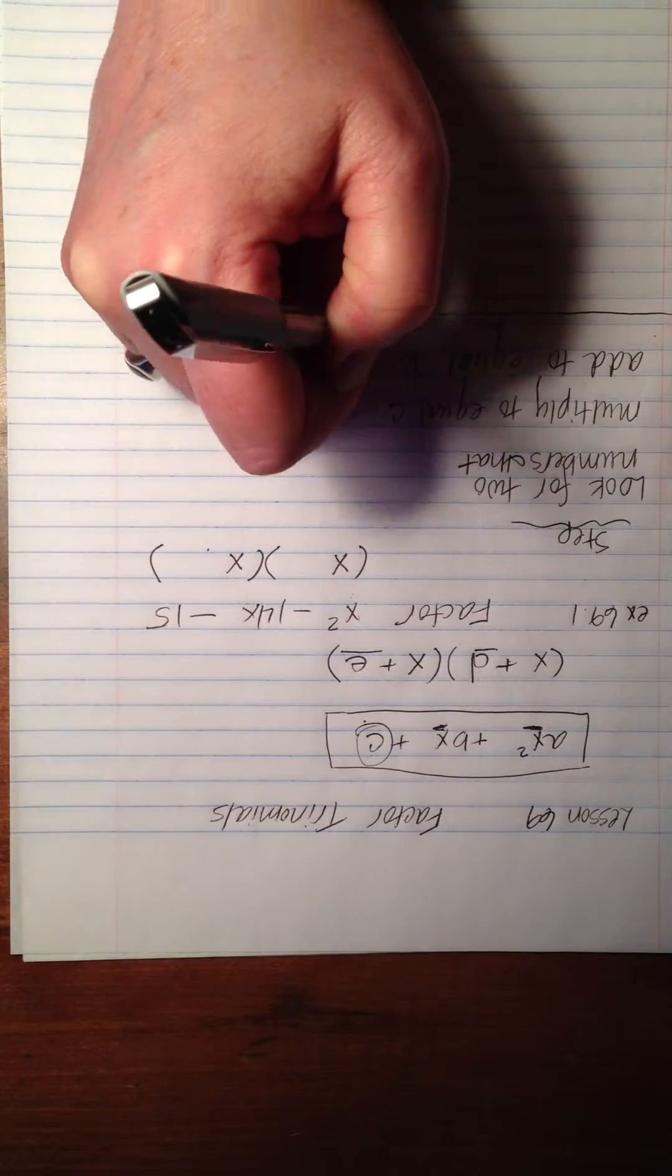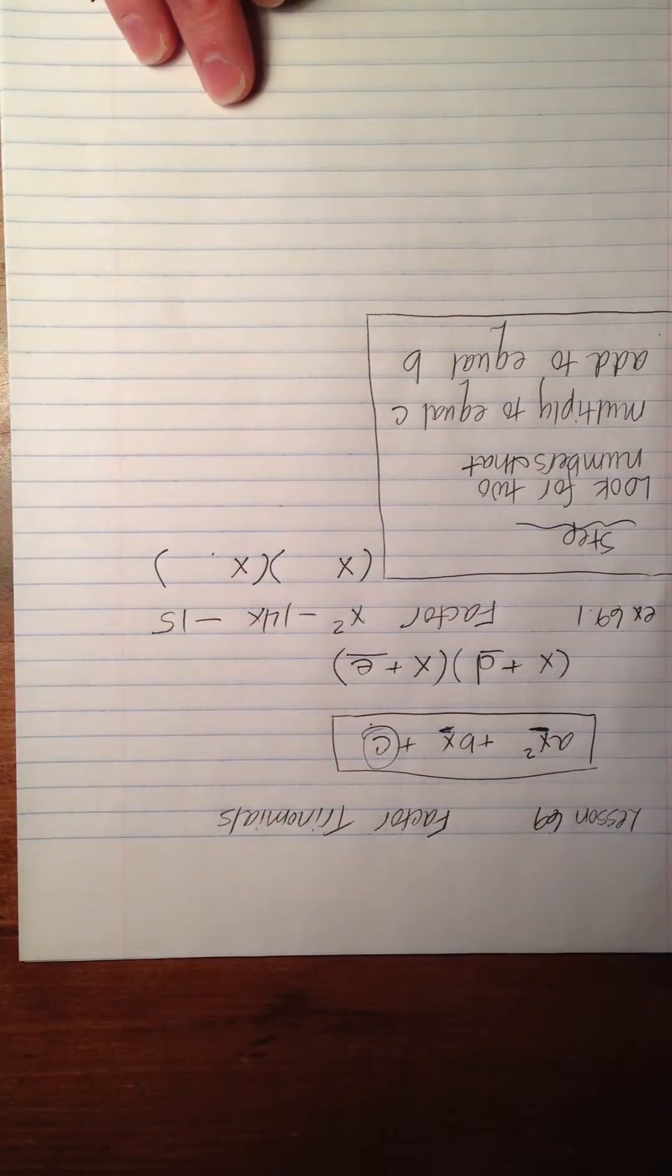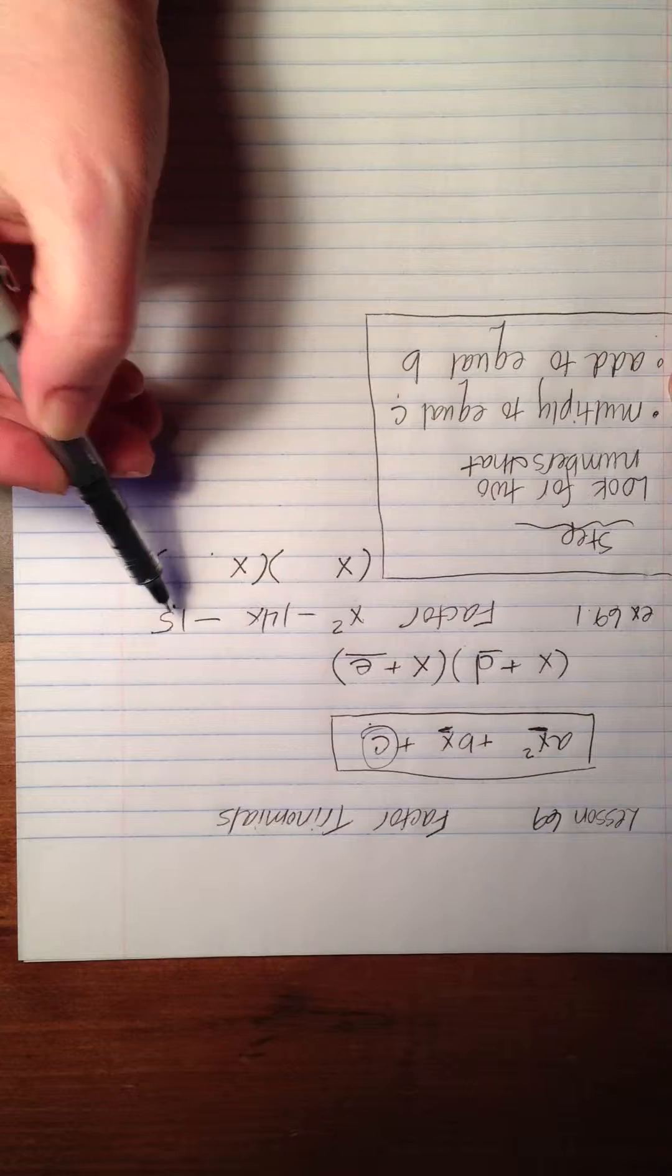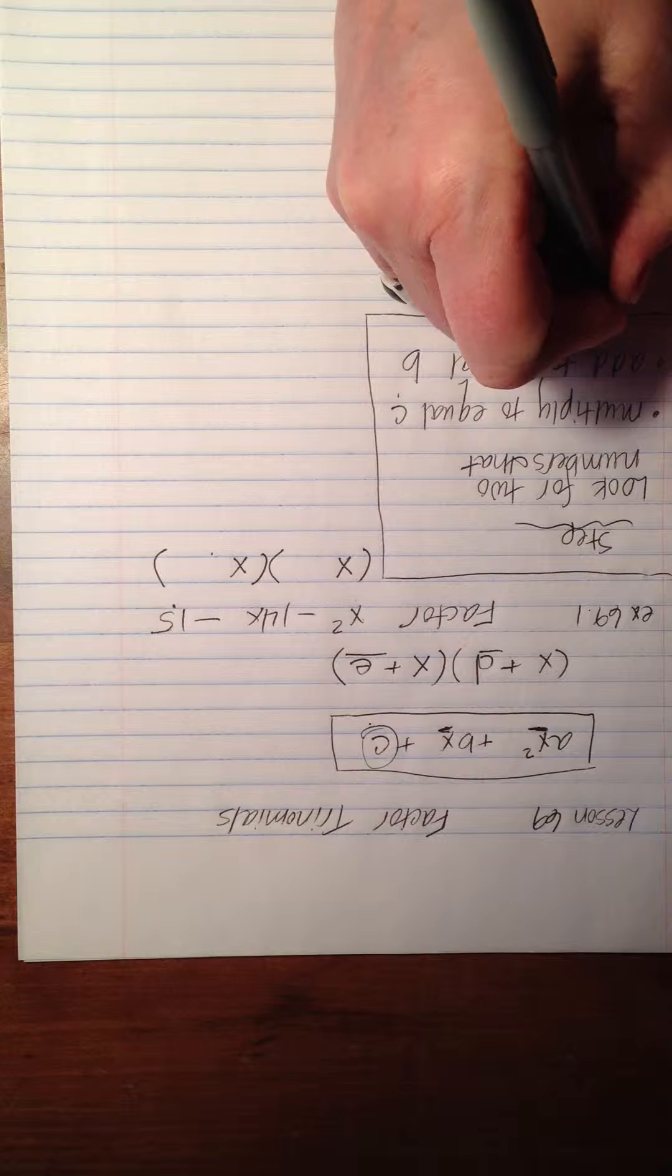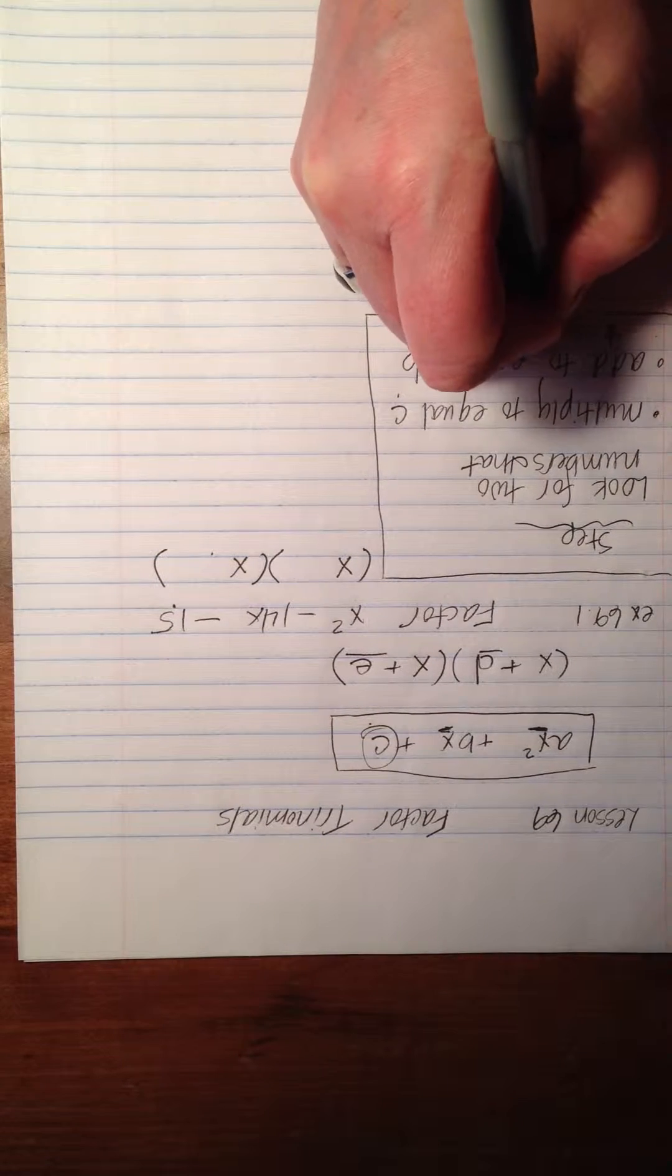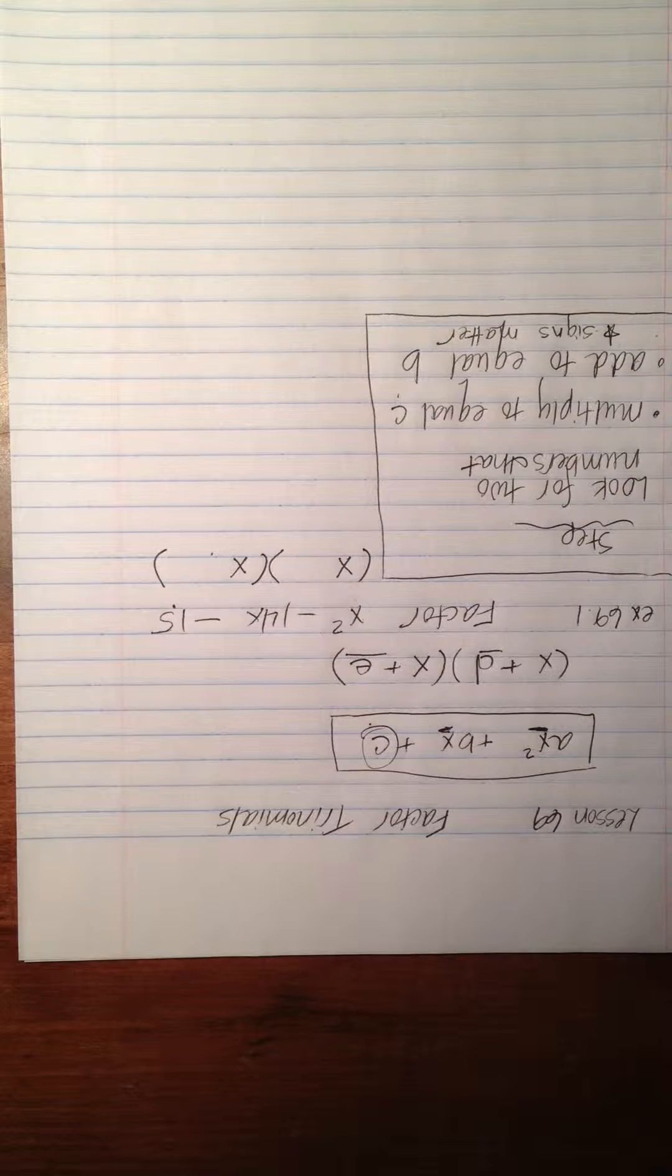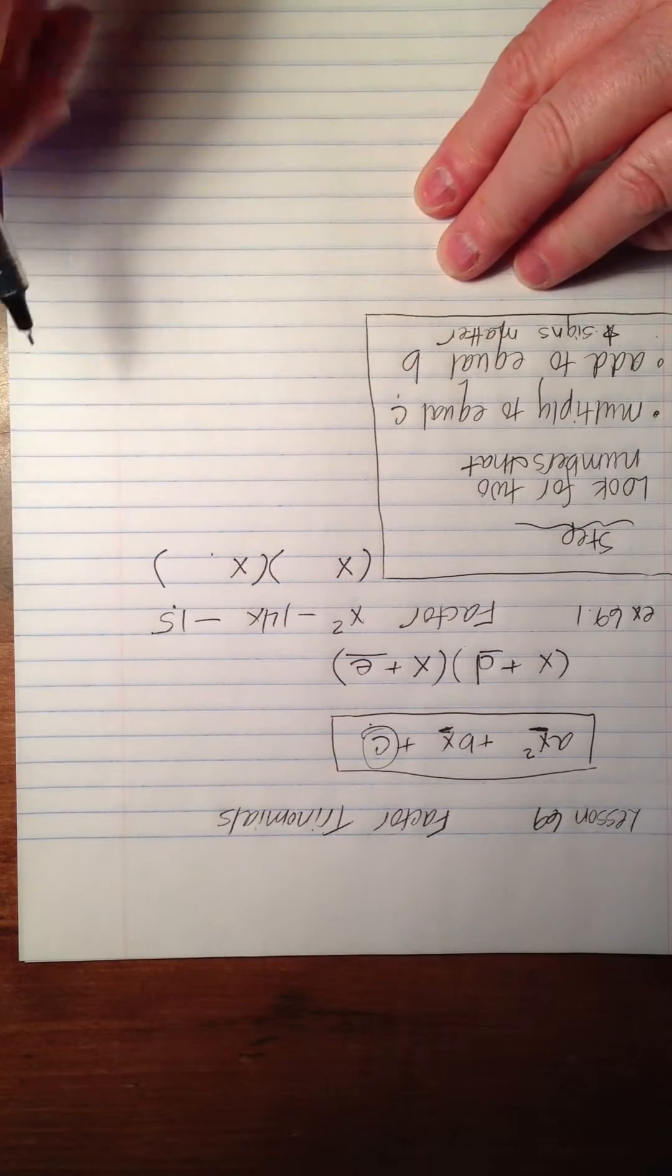This is the magic step. We look for two numbers that will multiply together to equal c, this last number down here, and then add to equal b, this middle number. And I'm going to put a star down here at the bottom and write 'signs matter.' What I mean by that is we have to take positive and negative signs into account. So here's how we start.